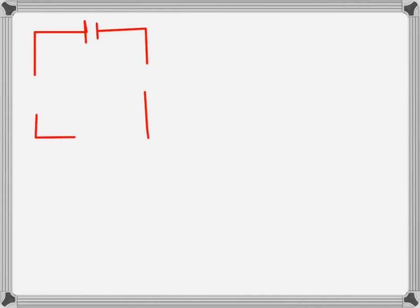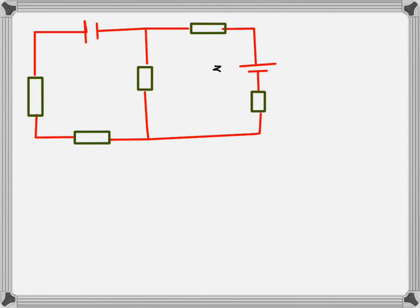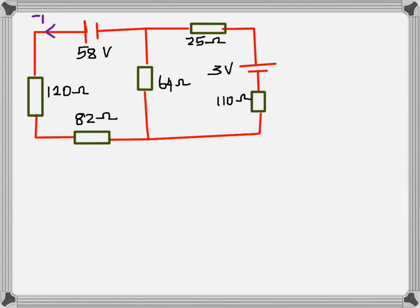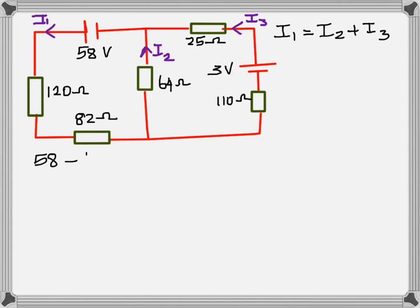Now let's consider another circuit which is a little bit more complex. The resistors are 110 ohms, 82 ohms, 120 ohms, and 64 ohms, with two batteries of EMF 58 volts and 3 volts. If you consider the currents, you will see that I1 equals I2 plus I3, looking at this junction.